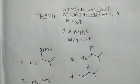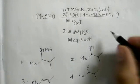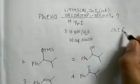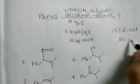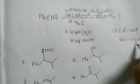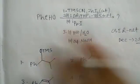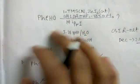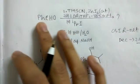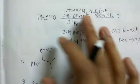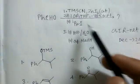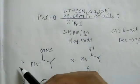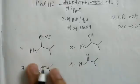Welcome to Chemistry Lover. In this video I'll be solving a problem from CSIR NET December 2016. The problem involves benzaldehyde treated with several reagents, and you have to predict the correct answer from four options given.